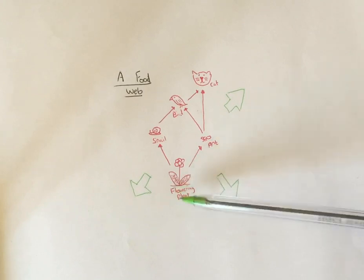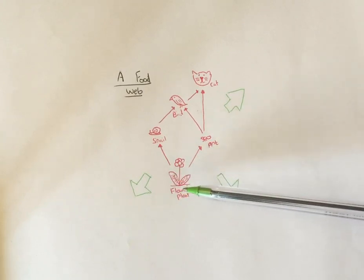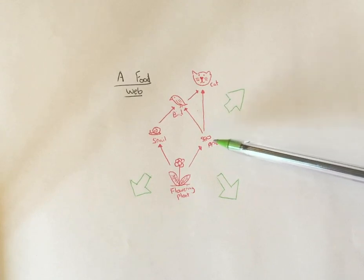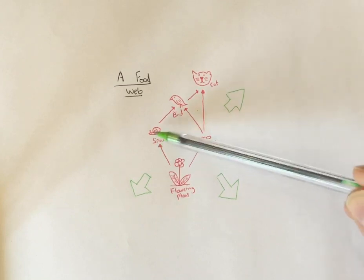I've got down here my producer, my flowering plant, what I called an angiosperm. I've then got a primary consumer, in this case being the ant. There are actually two primary consumers because we've also got a snail over here.